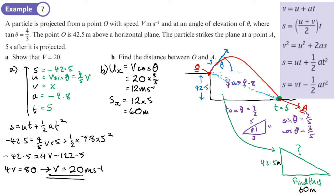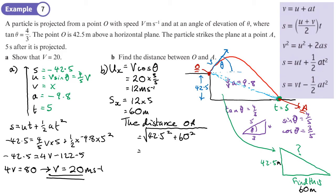Now we can apply Pythagoras: distance OA = √(42.5² + 60²). Calculating: √(42.5² + 60²) = 5√865/2 ≈ 73.527 meters. To three significant figures, that's 73.5 meters.